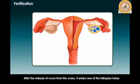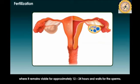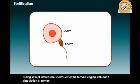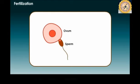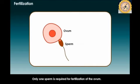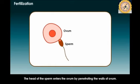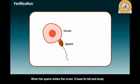After the release of the ovum from the ovary, it enters one of the fallopian tubes where it remains viable for around 12 to 24 hours, waiting for a sperm. During sexual intercourse, sperms enter the female vagina with each ejaculation of semen. Only one sperm is required for fertilization. The head of the sperm penetrates the wall of the ovum — only the head enters, not the tail — and when the sperm enters the ovum, it loses its tail and body.